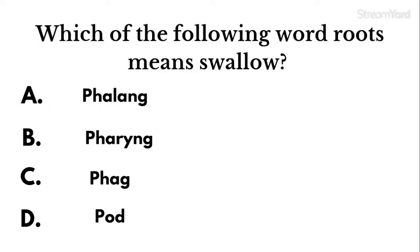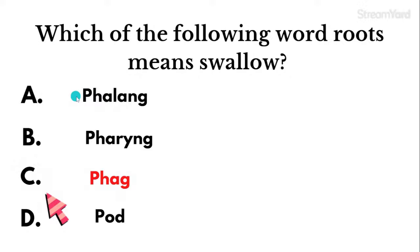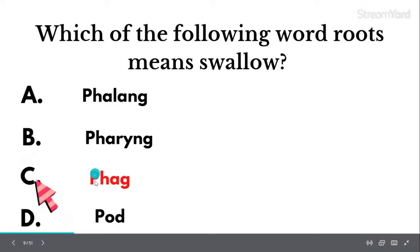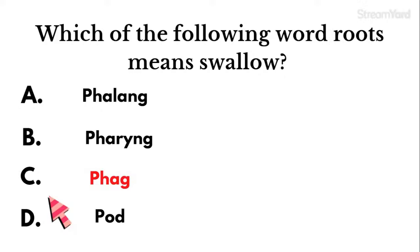Question four: Which of the following word roots means 'swallow'? The answer is C — phage. Falange refers to the fingers and toes, fringe refers to the throat, and pod refers to the foot. Phage is the word root that means swallow.